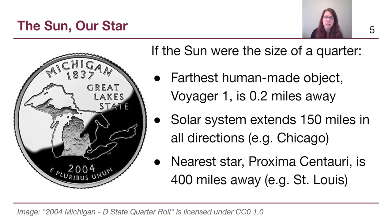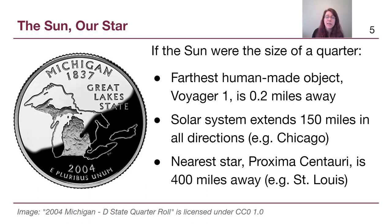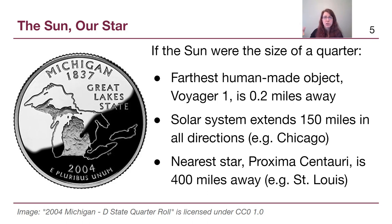Every single star that we see in the night sky has its own little system. The very closest star to us — if we are holding a little quarter in our hands right now — would be Proxima Centauri. It would probably be about a nickel or a quarter that someone was holding out in St. Louis, over 400 miles away. That means in all directions, 400 miles from where you're sitting, there are no other stars.